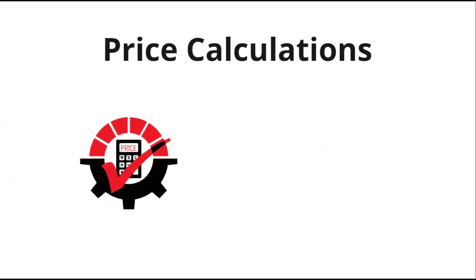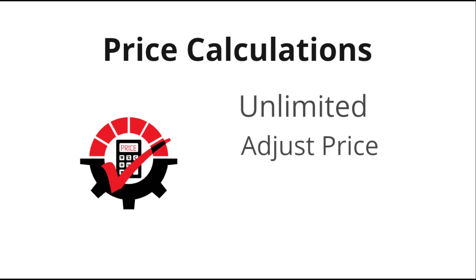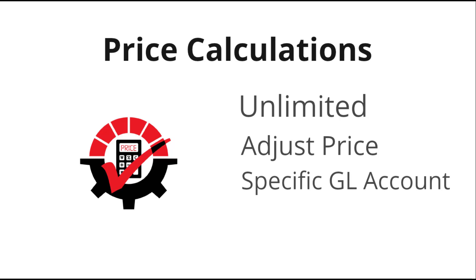Here are some things to remember about price calculations. Unlimited — you can add as many as you need. Adjust price: you choose whether you want the calculation to adjust the base price or the last calculated price, so if the previous calculation adjusted the base price, you choose to calculate on the new price or the base price. You don't even have to have the calculation affect the price at all. GL Accounts: you can assign specific GL accounts to each calculation. And Price Modes: there are various price modes available, so you can choose whether to adjust the price based on a percentage or fixed amount.